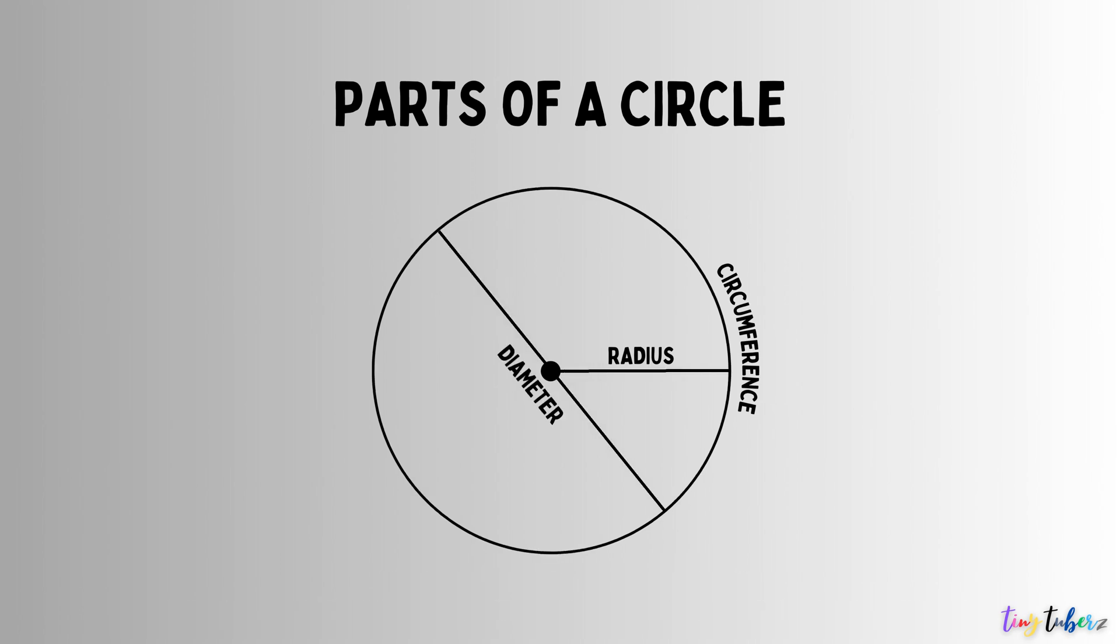Diameter. The diameter of a circle is the distance across the circle, passing through the center. It is the longest straight line segment that can be drawn within a circle. The diameter is typically denoted by the letter D and is twice the length of the radius.